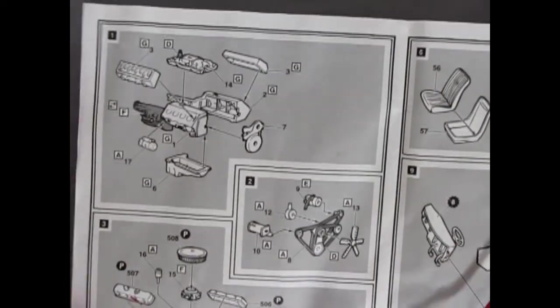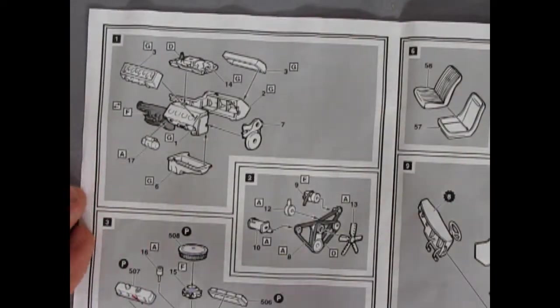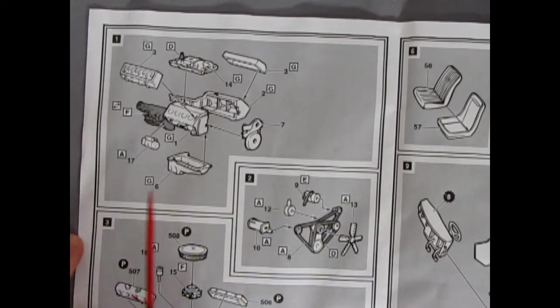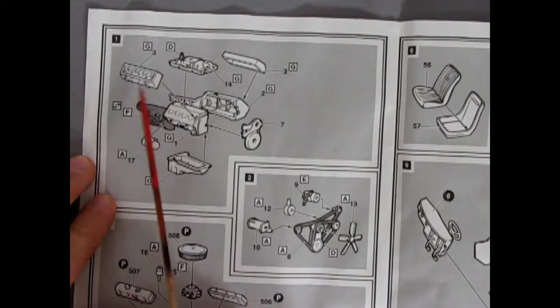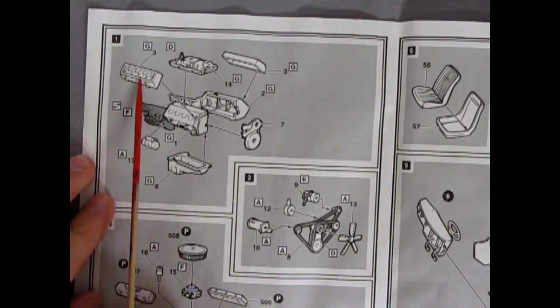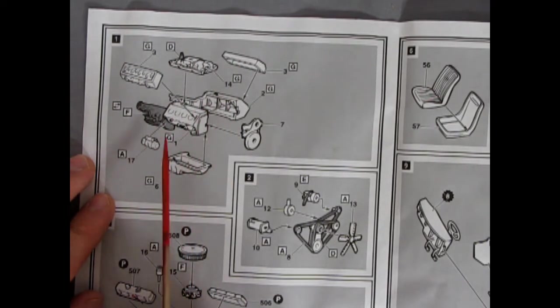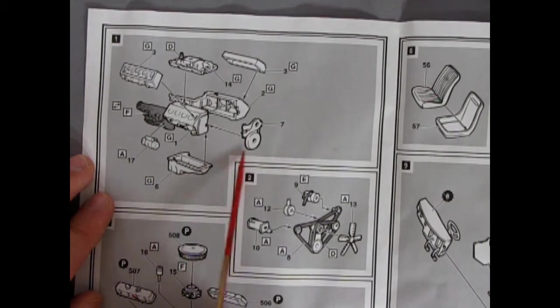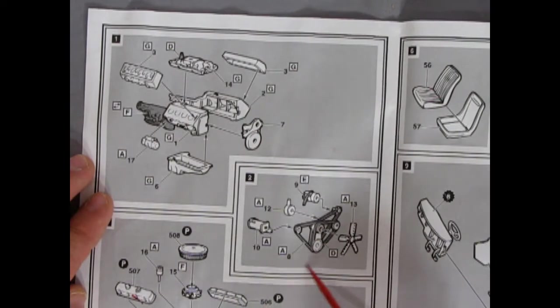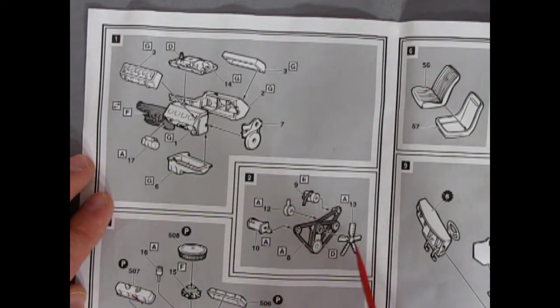So here we have our SS 396 engine. And as you saw in my little opening, somebody built this, but it does have nice detail. These had the rockers in the cylinder heads, the intake manifold, the right and left hand side of the engine with the transmission together, separate starter, oil pan, and the front cover.